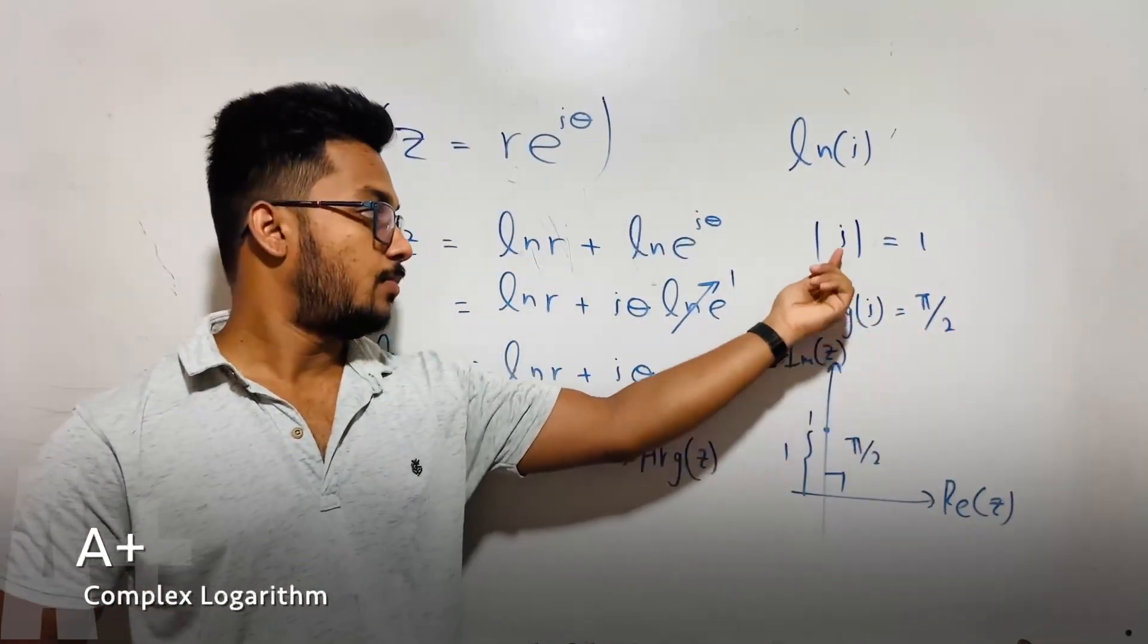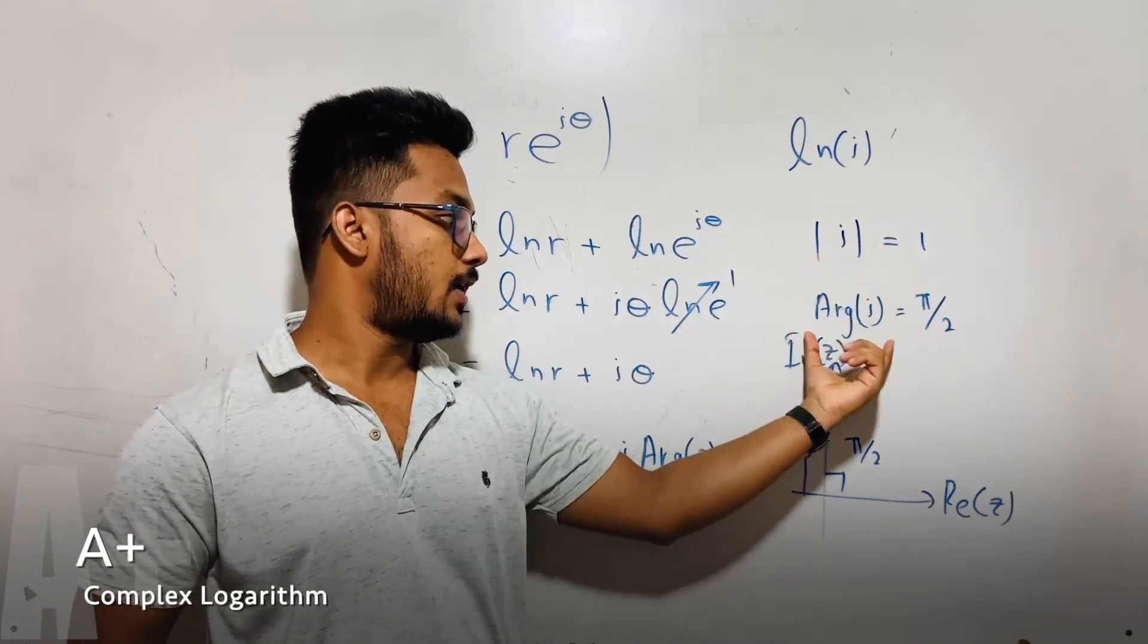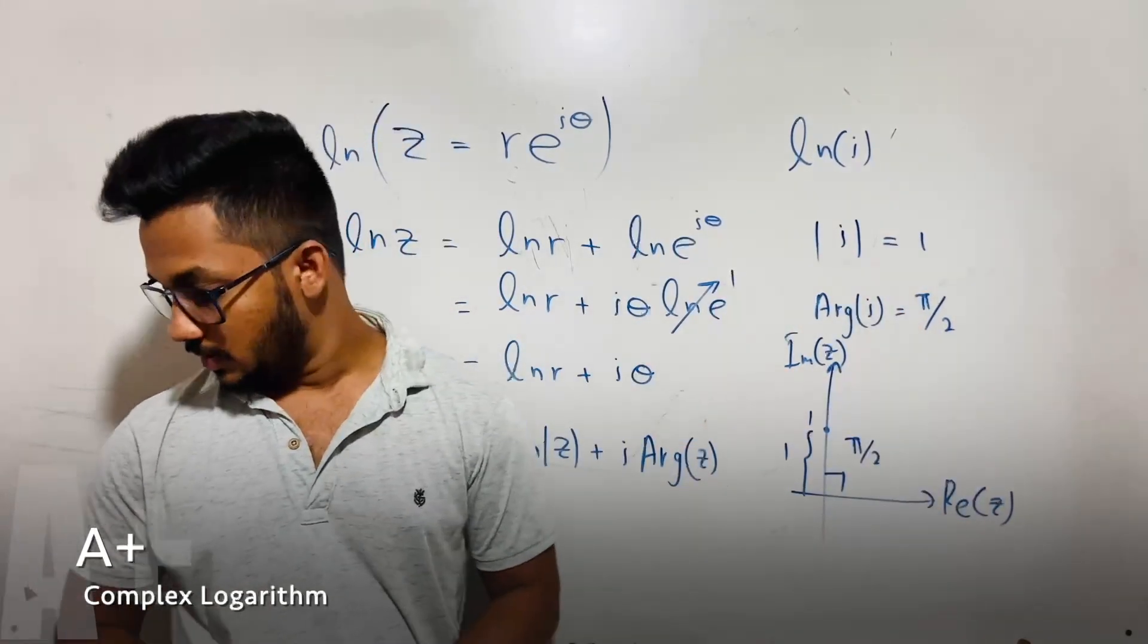I take these two things: modulus of i equals 1 and argument of i equals π over 2.